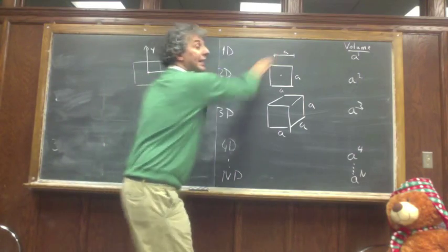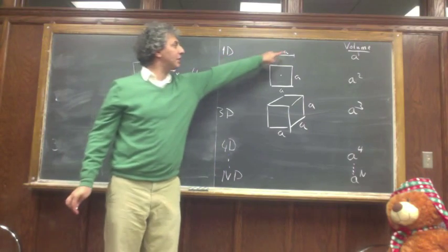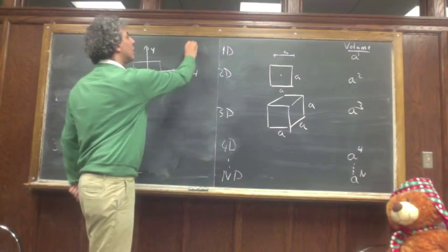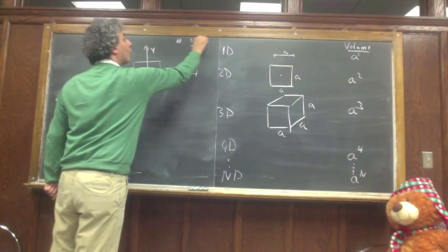In 1D, the surfaces are just two points: left point and right point. So this has two surfaces.